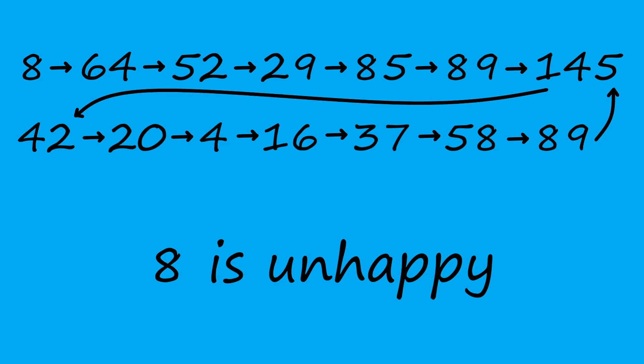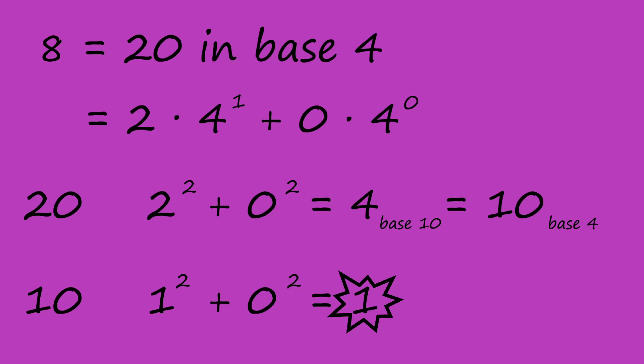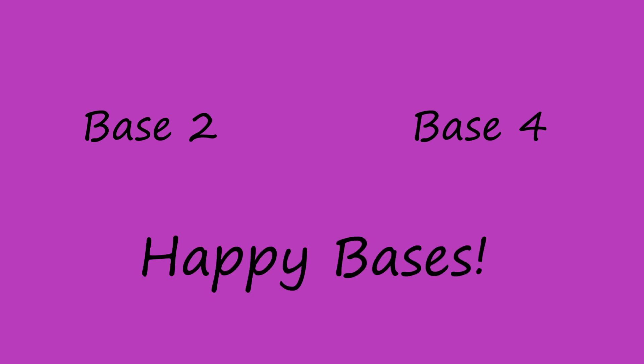For example, the number eight is unhappy in base 10, but happy in base 4, where it's represented by the digits 2, 0. In fact, in both the bases 2 and 4, every number is happy, and these bases are known as happy bases.